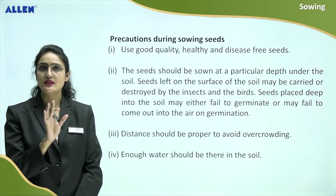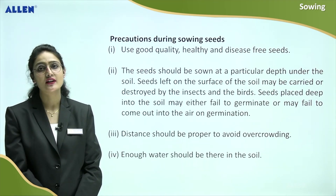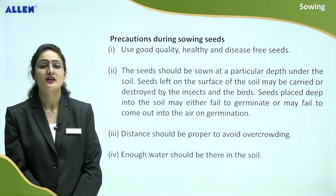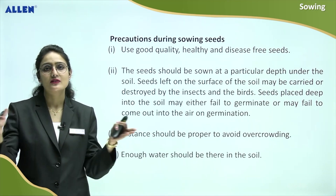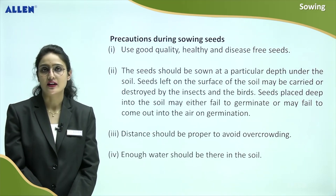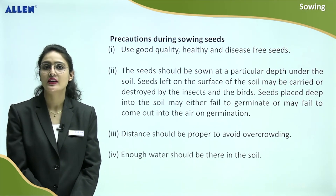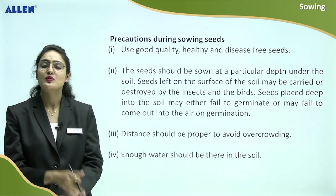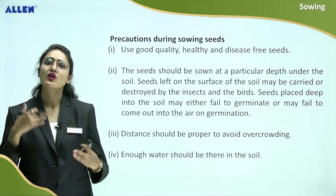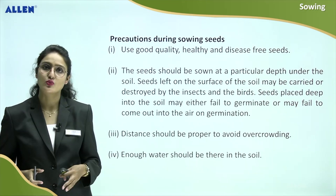In all these methods, there were some things in common — I have repeatedly said that we need to sow seeds at a proper depth and at a proper distance. So what is the reason for that? Why do we need to sow seeds at a proper depth, maintain proper distance between seeds, and what other precautions do we need to take at the time of sowing?